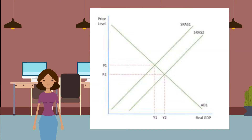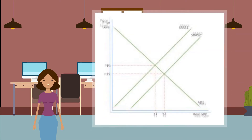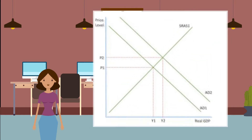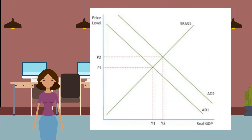A decrease in short-run aggregate supply would lead to higher prices and lower real GDP. In this new diagram, the initial equilibrium level is P1Y1 where AD1 equals SRAS1. The increase in the aggregate demand curve to AD2 has led to a change in equilibrium to P2Y2 — prices and real GDP are higher. A fall in aggregate demand would lead to lower prices and lower real GDP.